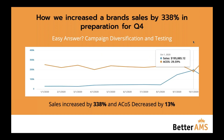Getting into the core of the presentation: how we increased a brand's sales by 338% in preparation for Q4. Easy answer — campaign diversification and testing. Sales increased by 338% and ACOS decreased by 13%. This brand had been on Amazon for around eight years, one of the original brands in their category, just running on what they'd always known — a few auto campaigns, a few manual campaigns per product, but they hadn't invested in sponsored display or pushed sponsored brands video and all these new things. We went in, looked at all the long-tail search terms, launched over 300 campaigns, and saw this increase. By diversifying their spend and testing other ad types, we actually lowered the ACOS.